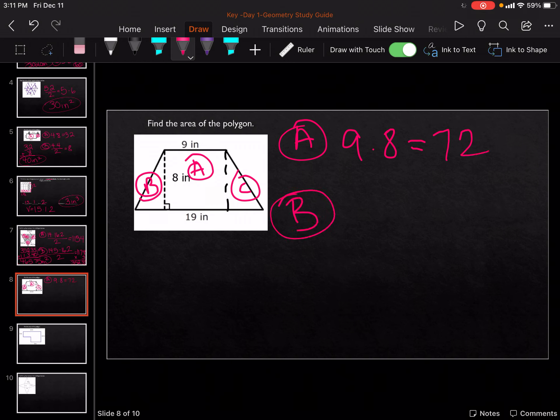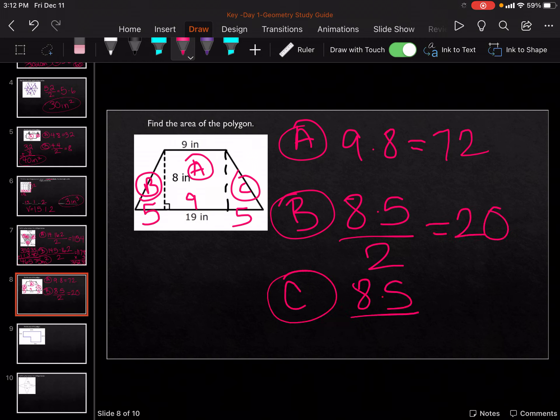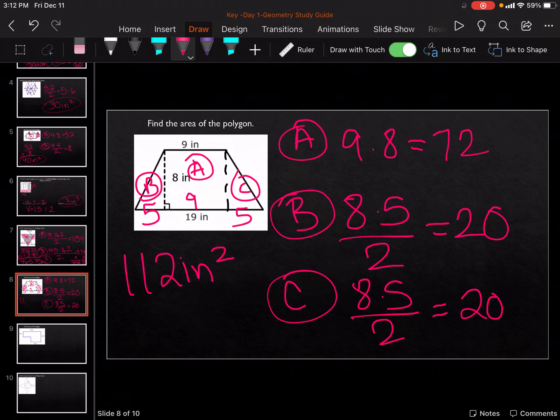And then for B, so we know that the height is 8, but we need to find the base. So we know that 9's in the middle. So 19 minus 9 gets me 10, but split between the two sides gets me 5 on each side. So then it's going to be 8 times 5 divided by 2. 8 times 5 divided by 2 gets me 20. And then C is going to be the same thing. Plus 20 plus 20 plus 72 gets you 112 inches squared.